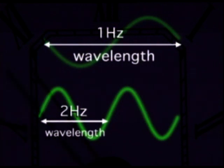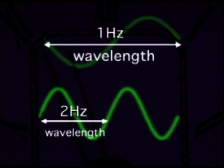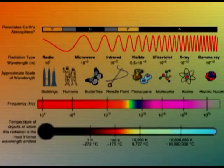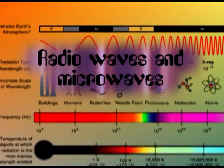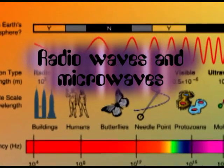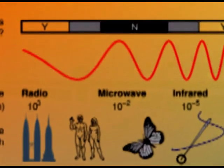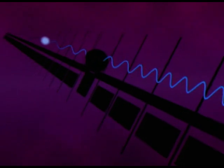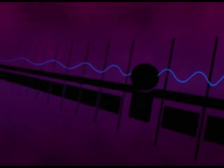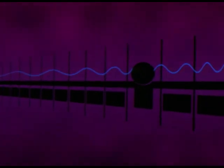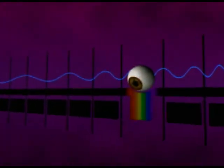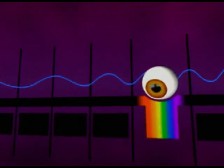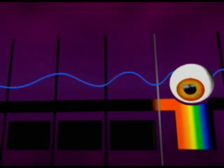If the frequency is doubled, the wavelength is halved. The electromagnetic spectrum is a continuous spectrum of waves, from very short waves at one end to very long waves at the other. Visible light is just a tiny part of it, with a wavelength of between 400 and 700 nanometres.